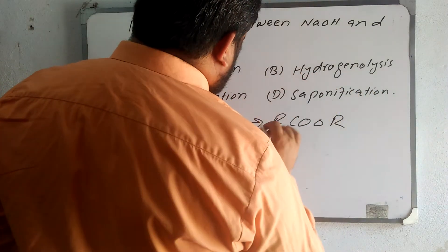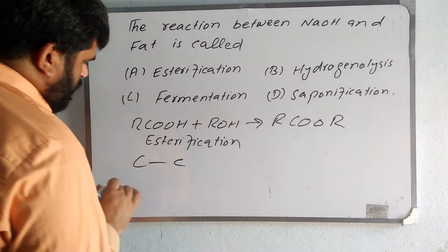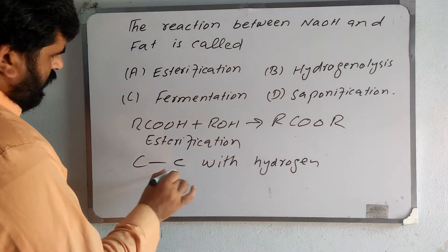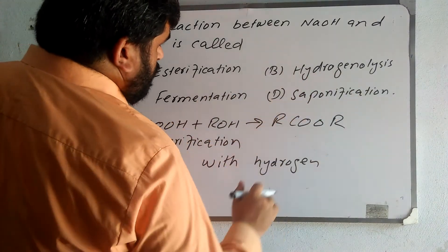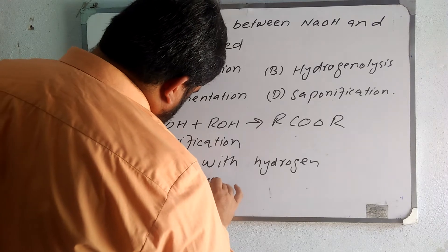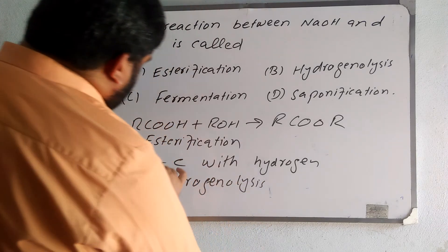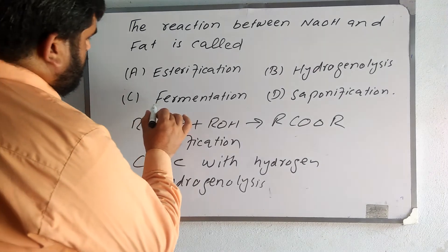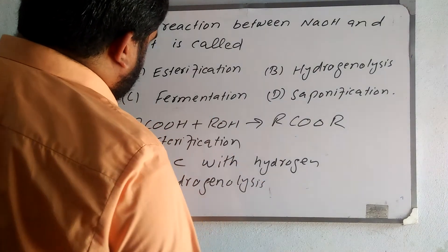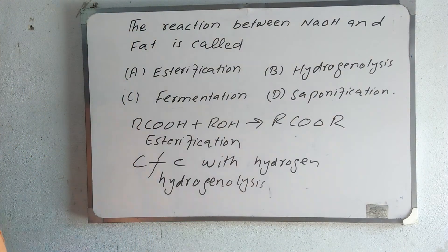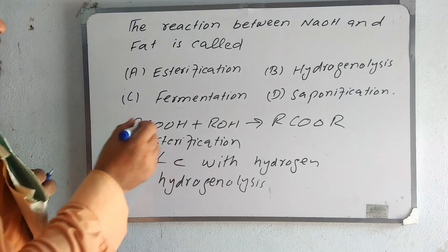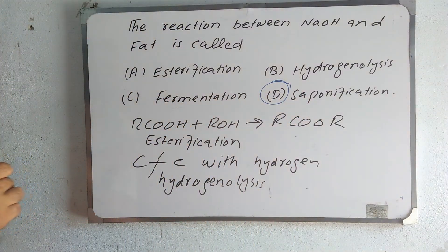Hydrogenolysis is the breakdown of a C-C bond with the help of hydrogen, so that option is not correct. Fermentation is a metabolic process in which a sugar converts into energy, so that is also not a correct option. Therefore, saponification is correct — saponification is the reaction between sodium hydroxide and fat.